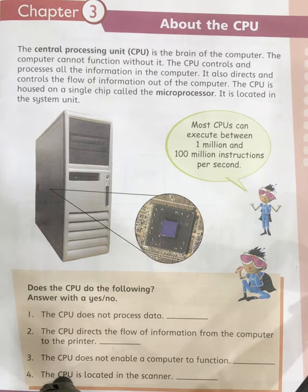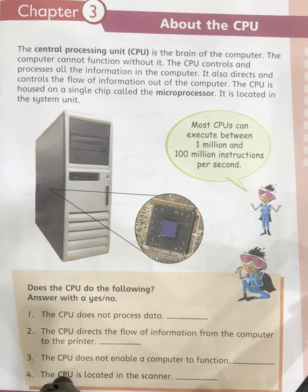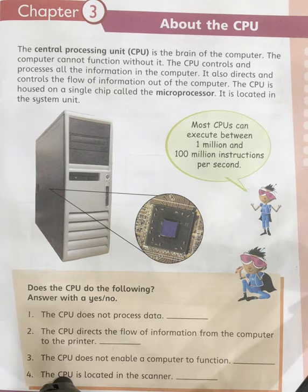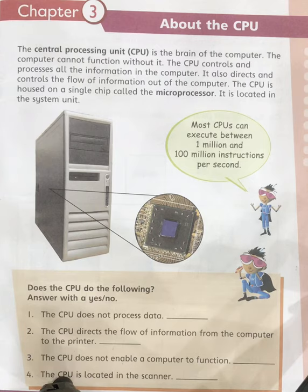For example, if I touch something hot — a hot cup or hot glass — my brain processes that information and tells me not to touch it, that I would get hurt. That is the function my brain performs. My brain tells me not to touch that thing. That is the same thing the CPU does for a computer.